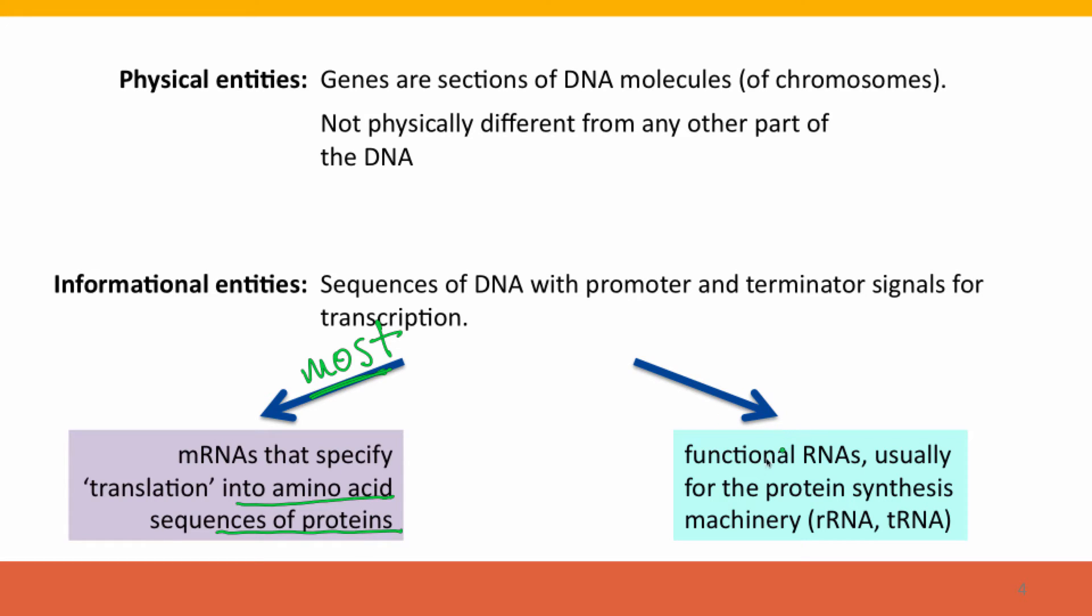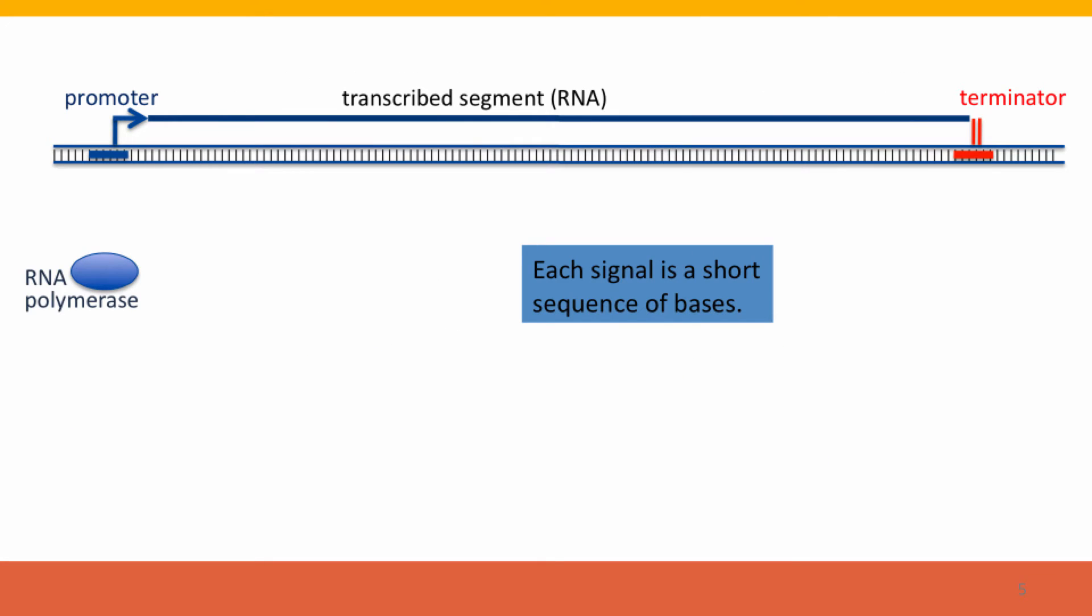Some genes, however, encode functional RNAs. These are RNAs that don't serve to make protein but are functional in their own right. Most of these are enzymatic components of the protein synthesis machinery, the ribosome, or they are the adapter molecules that decode the RNA sequence and connect it to the amino acids that are going to be inserted.